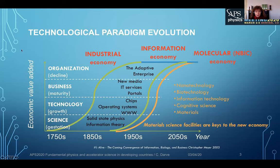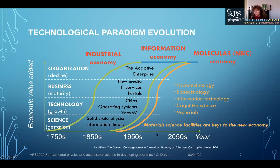The different technological paradigm evolution — we see here a curve that shows over the years, the decades, and the millennia how different economic value has been added from what science gives the possibility to raise. Based on this science, we have different technologies that give us better maturity, and then we implement all those things in businesses, society, and organizations. I take three examples of those revolutions: the industrial revolution, the information revolution, and the molecular revolution.